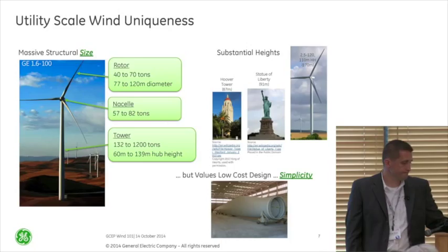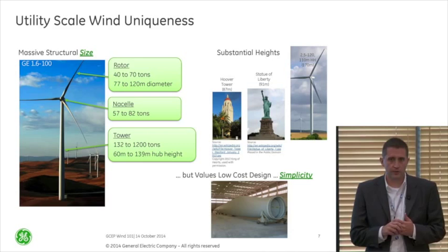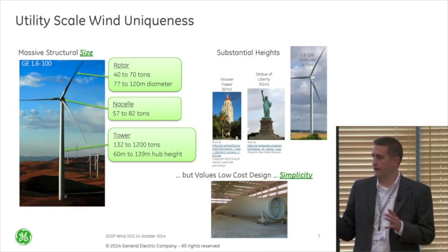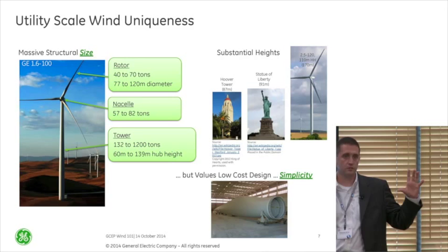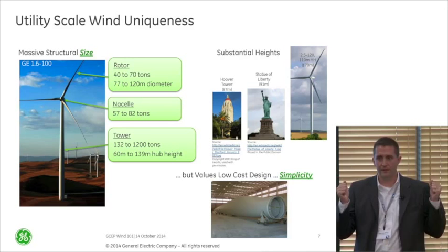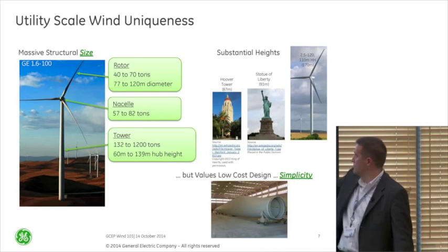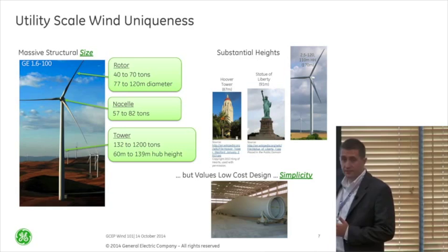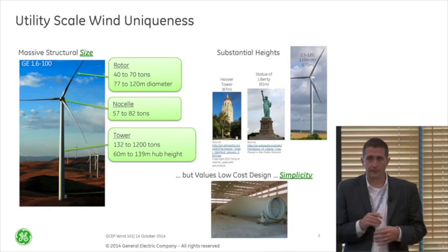There are really two major points that make this technology different from anything else we've done in energy generation. The first is the size — this thing is absolutely huge. I'm trying to extract energy from a fluid — air — with a density of about 1.2 kilograms per cubic meter, very low density, so I need to make these things massively big. Our 1.6-100 has a 100-meter rotor diameter on top of an 80-meter tower hub height. The weights are substantial: the rotor is about 50 tons, the nacelle another 60 or 70 tons, and the tower is huge.